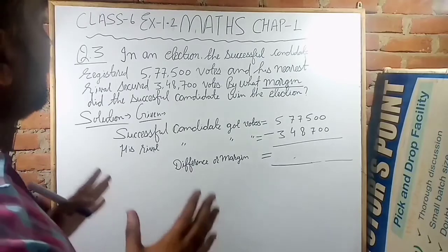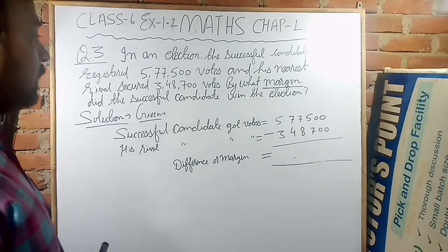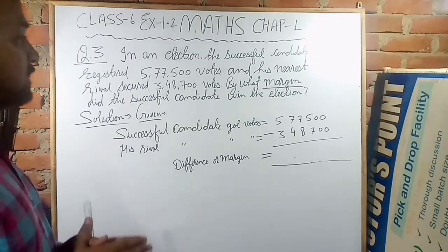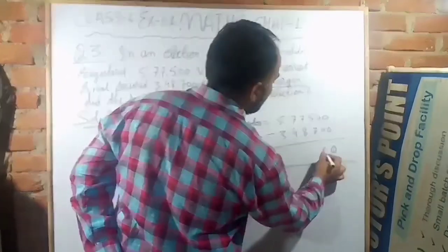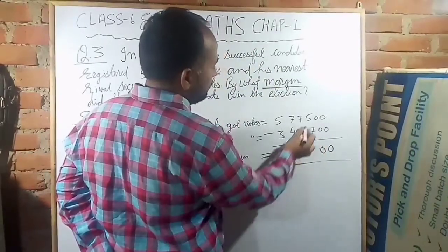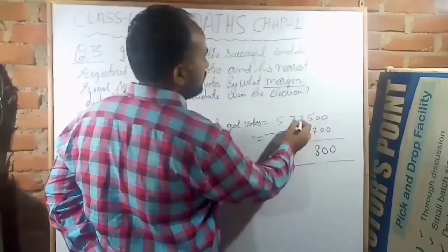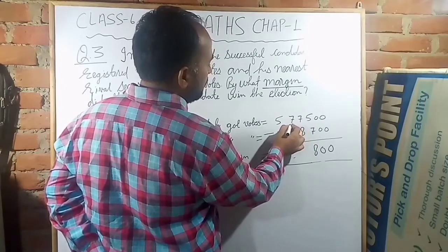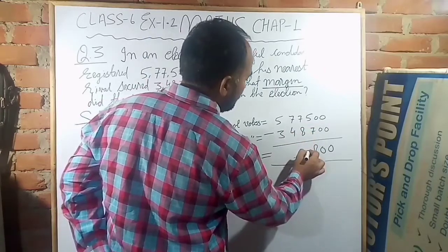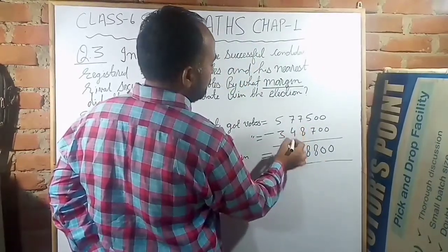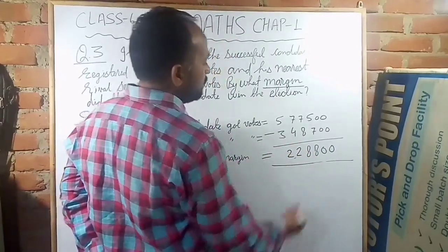In this question we will use the subtraction method. Zero minus zero gives zero. Five is lesser than seven, so we will take a carry — fifteen minus seven gives eight. After taking carries, sixteen minus eight gives eight. Six minus four gives two. Five minus three gives two.